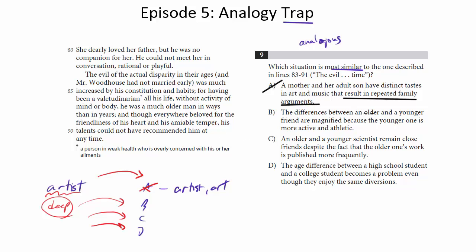How about B? The differences between an older and a younger friend are magnified because the younger one is more active and athletic. Notice this maps much more directly on the scenario, right? You've got an older and a younger friend, so an older father, a younger daughter. And those differences that are already there because of the age differences are magnified because the younger is more active and athletic. Remember they said in this part of the passage that he was older than his years because he didn't take very good care of himself,